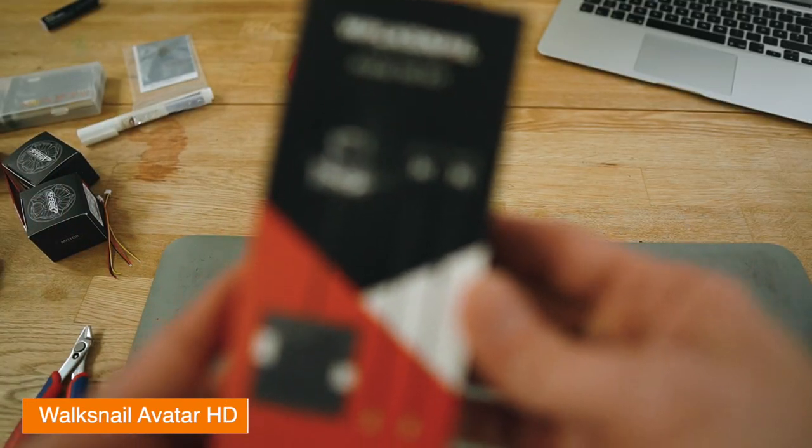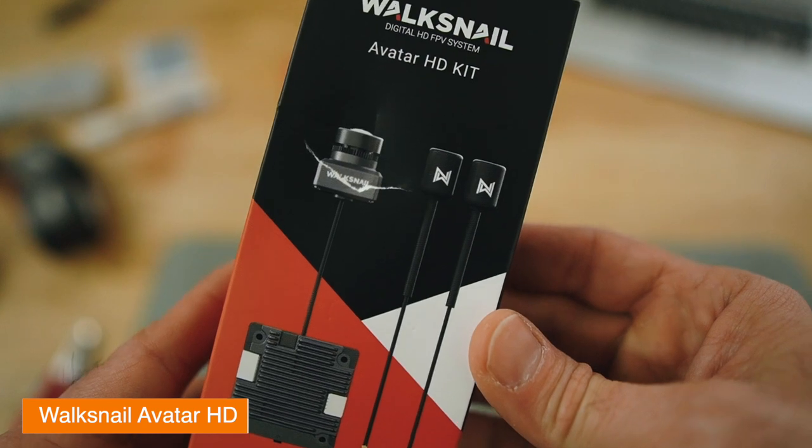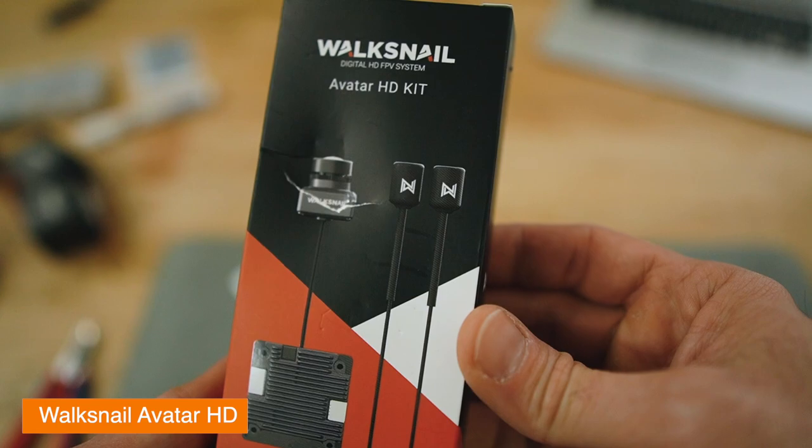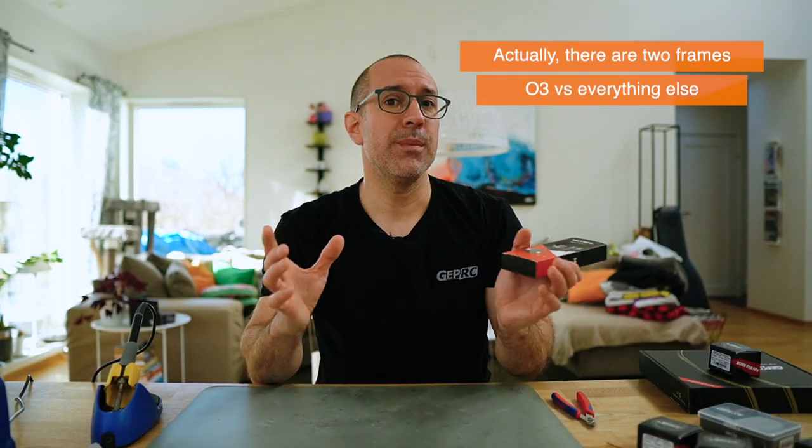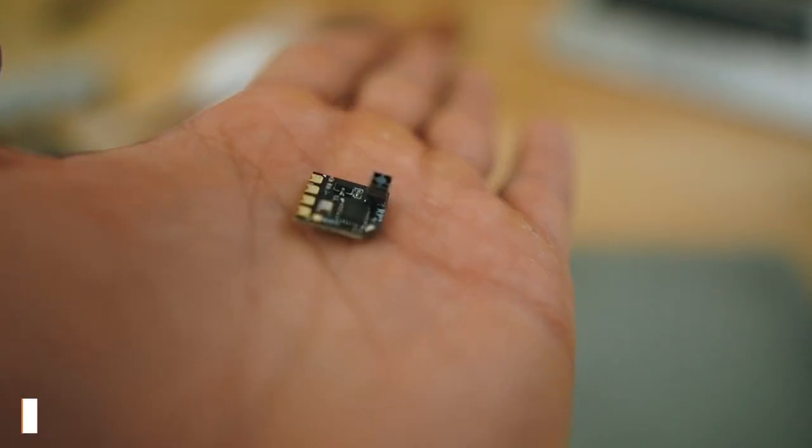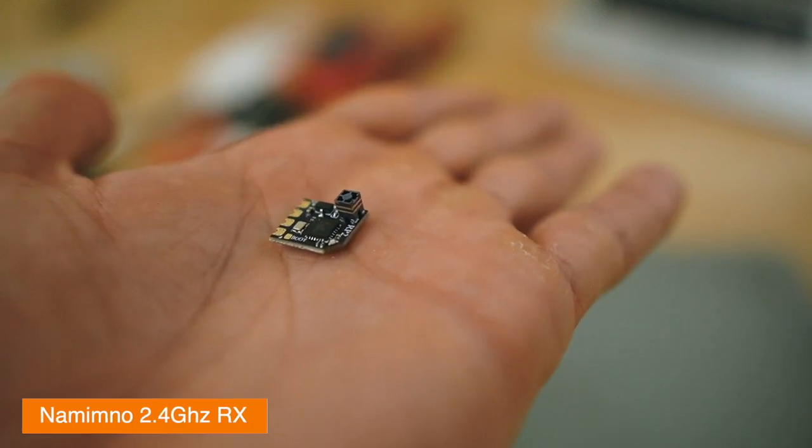For the VTX I'm choosing to do a Walksnail first because it's a little bit cheaper than an O3, second it's the same process if you were using an O3 or Vista - the frame fits all of these cameras and VTXs so process wise it's not different. I'm enjoying quite a lot flying my Walksnail system, it's the one I'm using the most lately. And of course I'm going to be adding an ExpressLRS receiver to my drone.